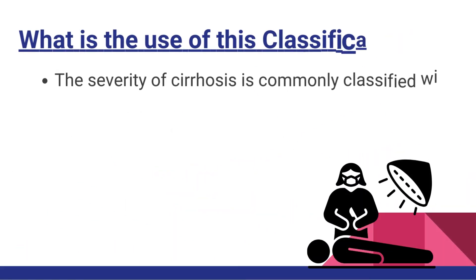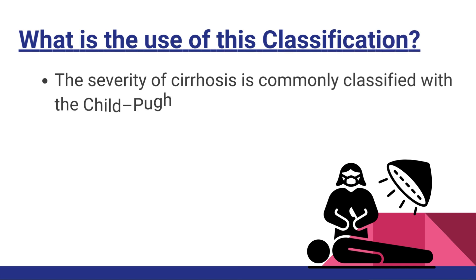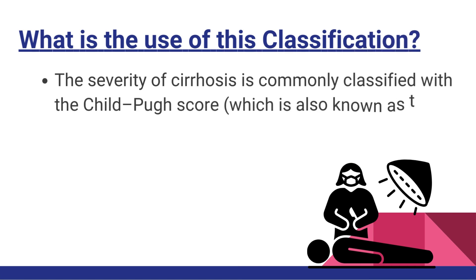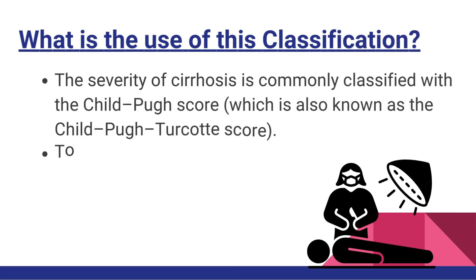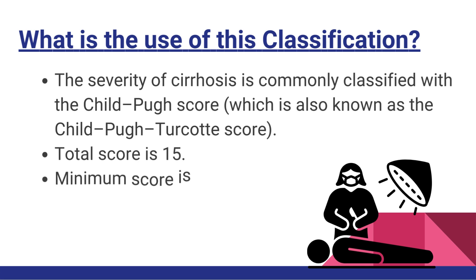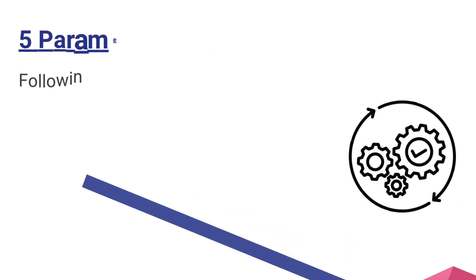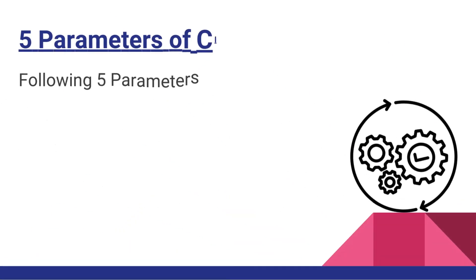The severity of cirrhosis is commonly classified with the Child-Pugh score, also known as the Child-Turcotte-Pugh or CTP score. The total score is 15 and the minimum score is 5.